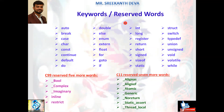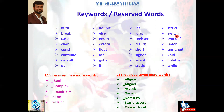According to C89, it consists of 32 keywords that must be represented in lowercase, like: auto, break, case, char, const, continue, default, do, double, else, enum, extern, float, for, goto, if, int, long, register, return, short, signed, sizeof, static, struct, switch, typedef, union, unsigned, void, volatile, while. These 32 keywords should be represented in lowercase only.